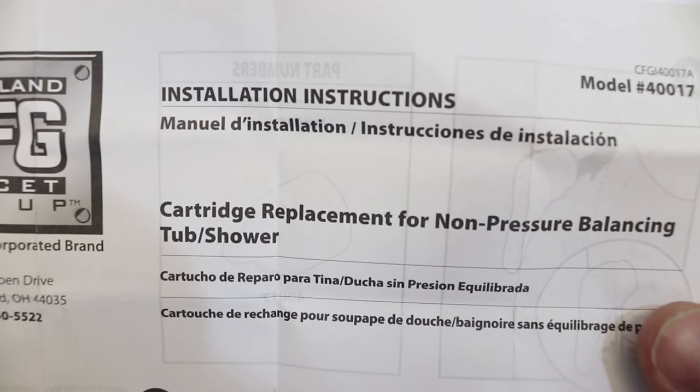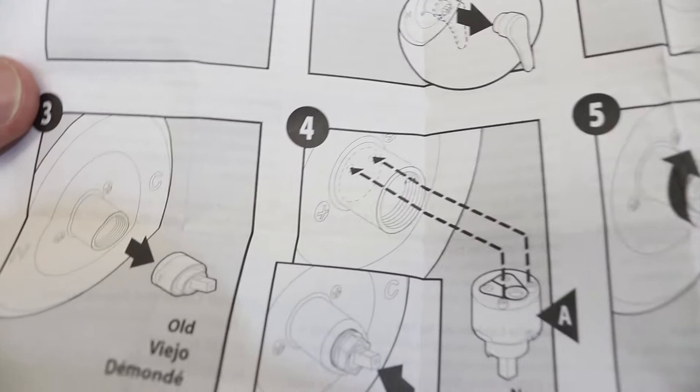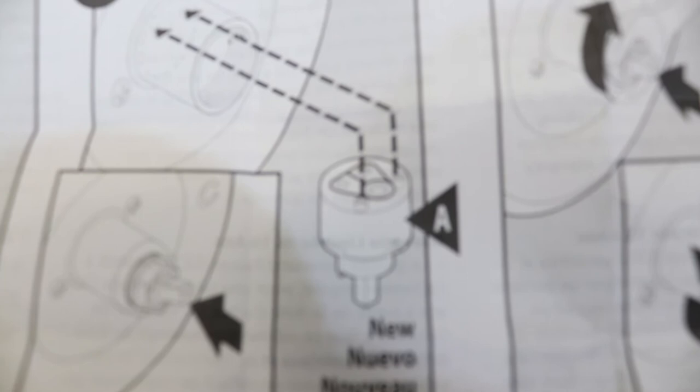Shows the cartridge, how to remove the handle and the nut assembly. It shows how to install the new assembly. If you look close there's two little notches on the cartridge and they're going to show where to have those for the installation.